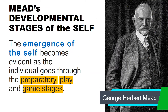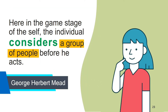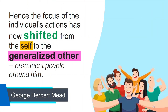Let us take a look at Mead's developmental stages of the self. The emergence of the self becomes evident as the individual goes through the preparatory, play, and game stages. In the game stage, the individual considers a group of people before he acts. The self abides by the rules of the game, and the individual's focus shifts from the self to the generalized other. The self begins to acknowledge the expectations of others on how he should act and behave — becoming less self-centered and more other-centered.